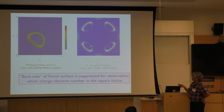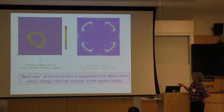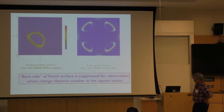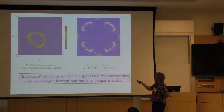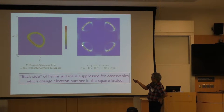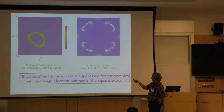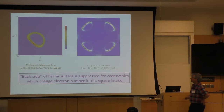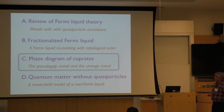They're moving in this entangled background, giving you a fairly non-trivial K-dependence quasi-particle residue. So then you get Fermi surfaces where the total area enclosed is P. The spectral weight on one side is much smaller than on this side, but it's non-zero everywhere — it's really an actual Fermi pocket.